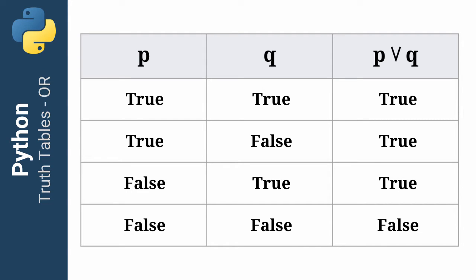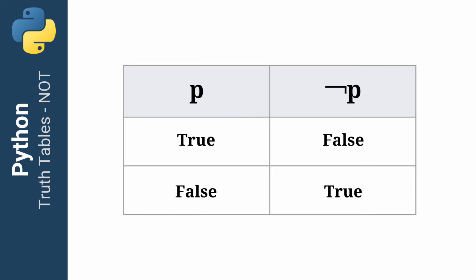For the OR truth table: only one operand needs to be true. In rows one through three, either p or q or both is true, so the result is true. In row four, both p and q are false, which fails the OR test and returns false. The NOT operator looks for when something is false — if p is true, the NOT operation fails; if p is false, it passes and returns true. NOT is looking for the opposite: normally we look for true, but with NOT, we're looking for false.